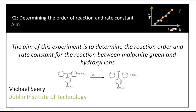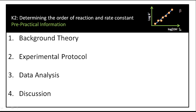This experiment is about determining the order of reaction and rate constant for the reaction between malachite green and hydroxyl ions. We'll look at some background theory, consider how this impacts the experimental protocol, consider the data analysis, and finish up with some discussion.